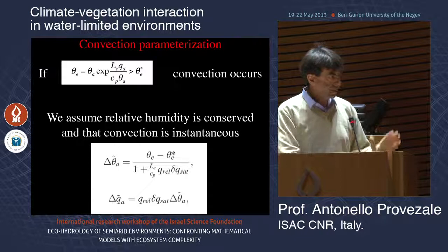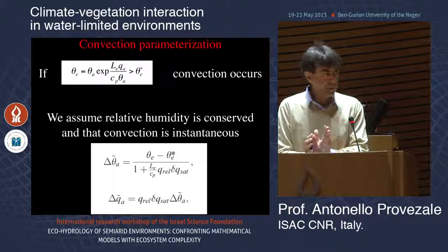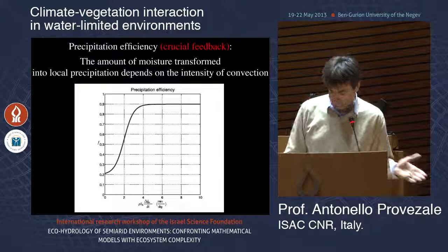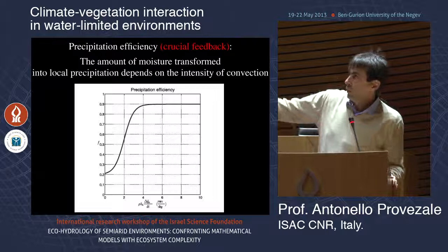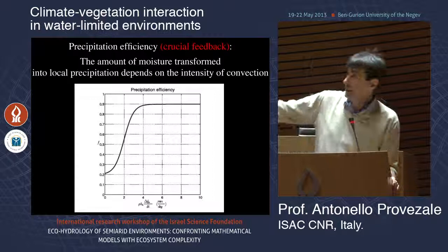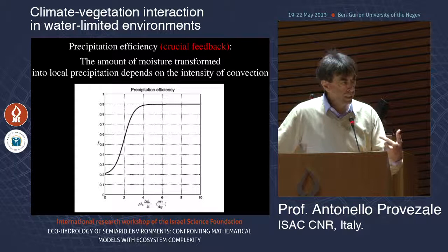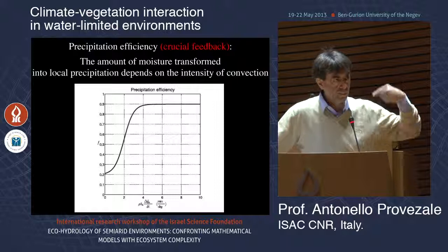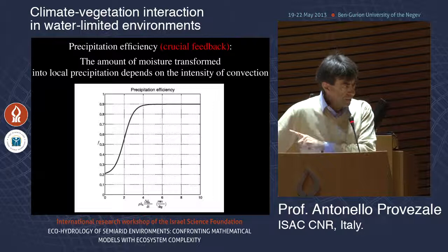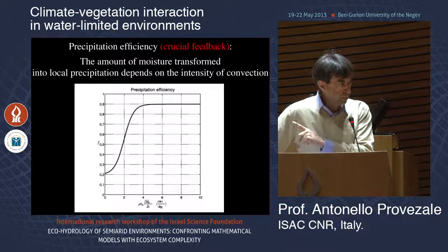What we do comes not from first principles but from observations: after convection, the relative humidity of the PBL remains constant at the same value it had before convection. There is no theory for that — it's just a very robust observation. The other key choice is the efficiency of precipitation formation, which we assume to be a nonlinear function of the convective flux intensity. This is one of the open issues; you cannot derive it from models because most models assume it.